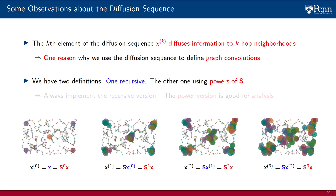There are two equivalent versions of the diffusion sequence: one recursive and one using powers of the shift operator S. Always use the recursive version in implementations — this warning bears repeating. Always use the recursive definition of the diffusion sequence, as there are dramatic differences in computational cost. Incidentally, when we consider distributed systems, this is the only version that can be computed. The power version is the one we will use for analysis.